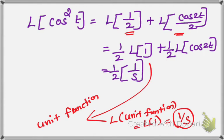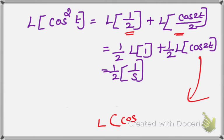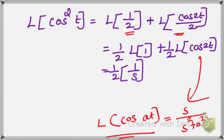As already proven and shown in the description box, the Laplace transform of 1 equals 1 by s. For the second term, L of cos 2t: the formula for L of cos at equals s divided by s squared plus a squared. This has also been proven — check the description box for the link.